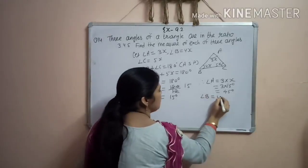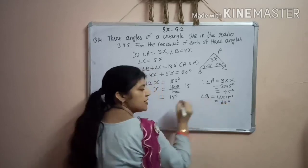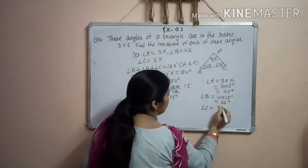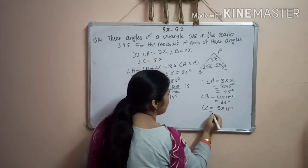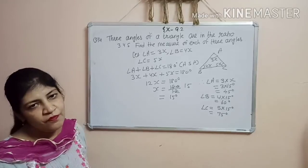Angle B is 4x, 4 into 15. That is 60 degree. And angle C is 5x, 5 into 15. That is 75 degree.